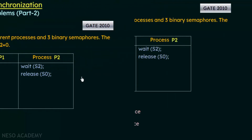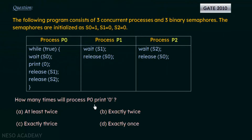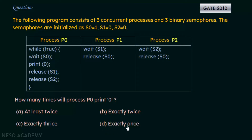Now let's see the question: how many times will process P0 print 0? We have to determine this given the processes executing as described and with initial semaphore values S0 equal to 1, S1 equal to 0, and S2 equal to 0. We have four options: A — at least twice, B — exactly twice, C — exactly thrice, D — exactly once.